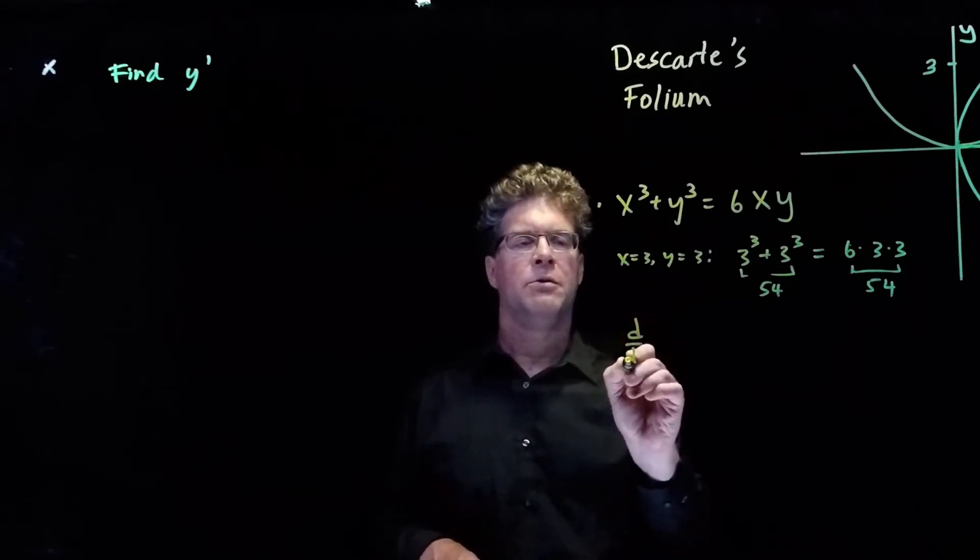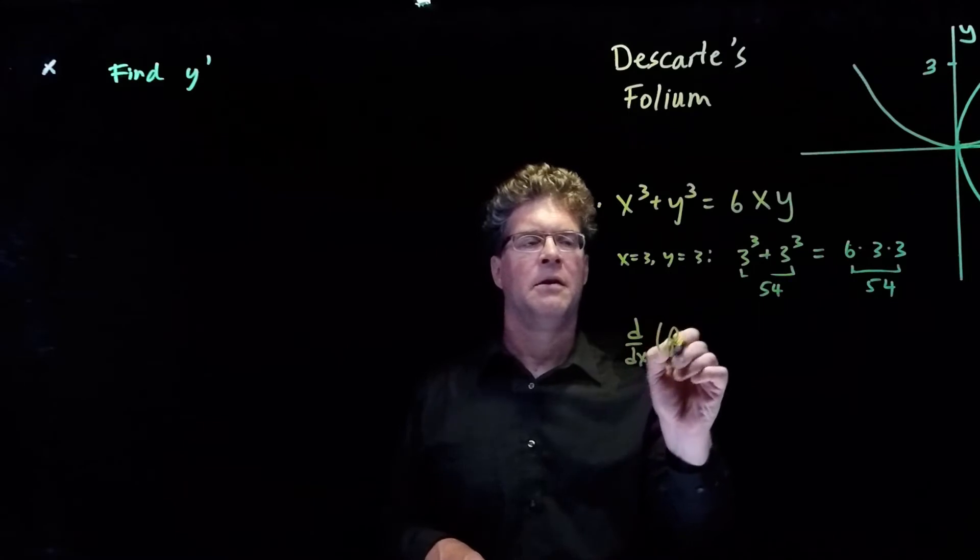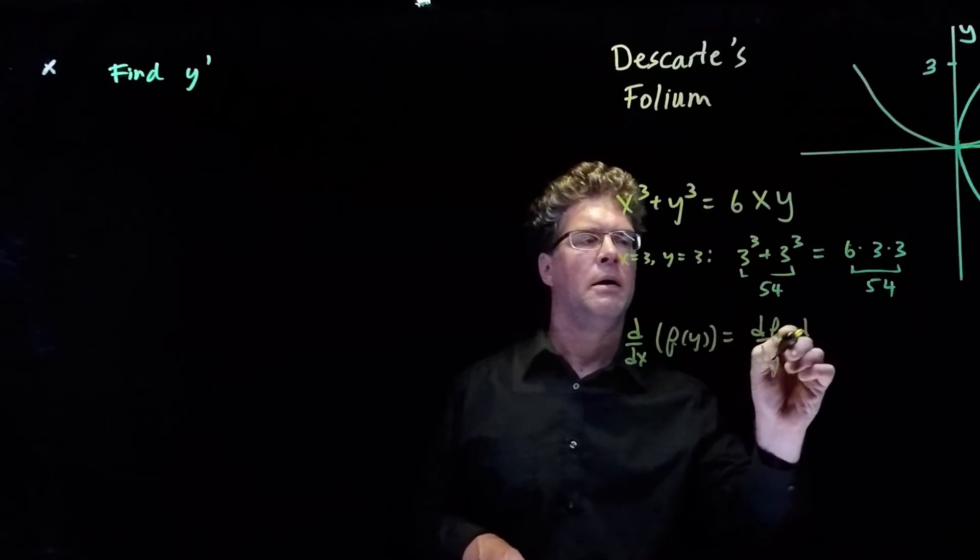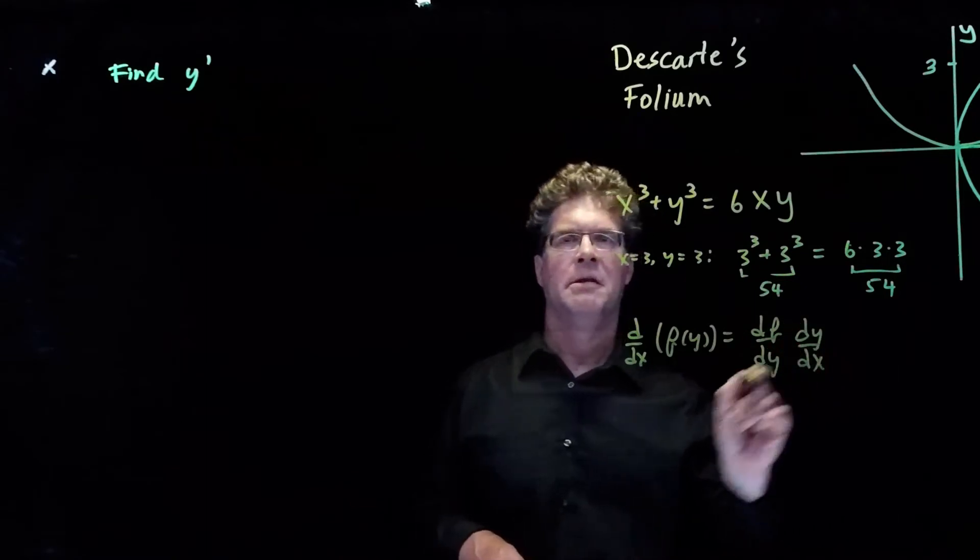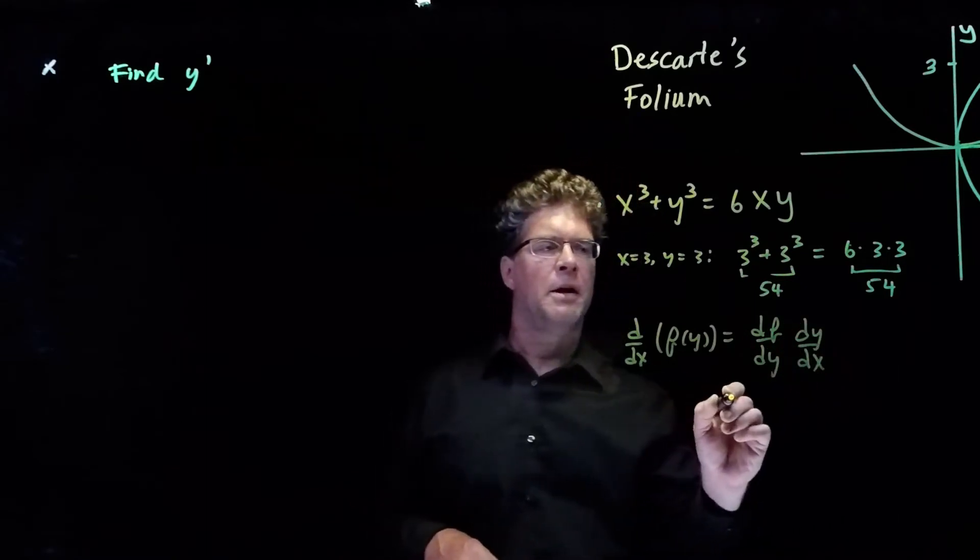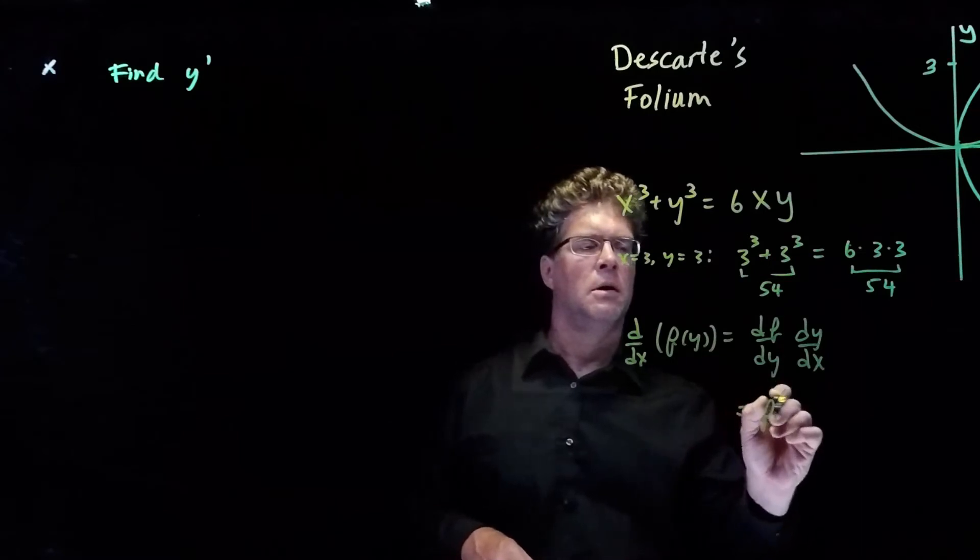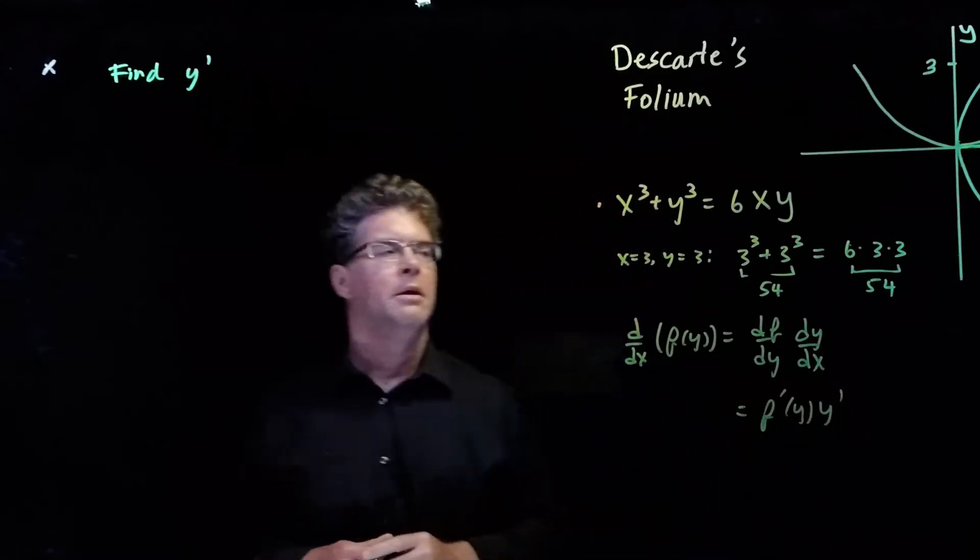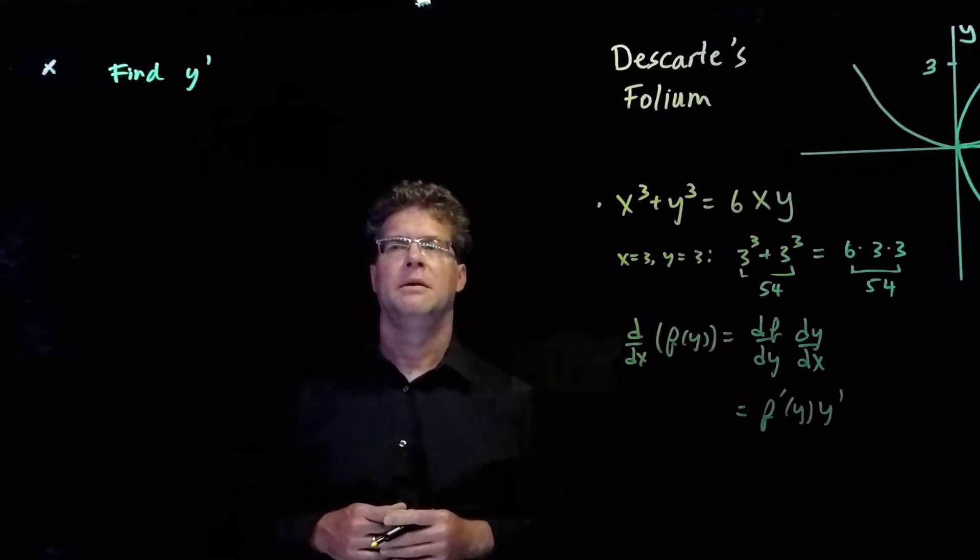If we take the derivative with respect to x of f of y, this is df/dy times dy/dx. Or we can also write it as being equal to f prime y times y prime. The two are equivalent.